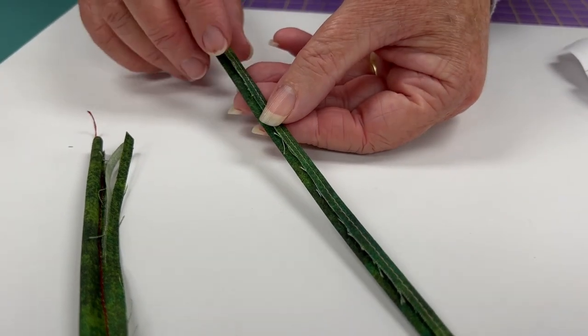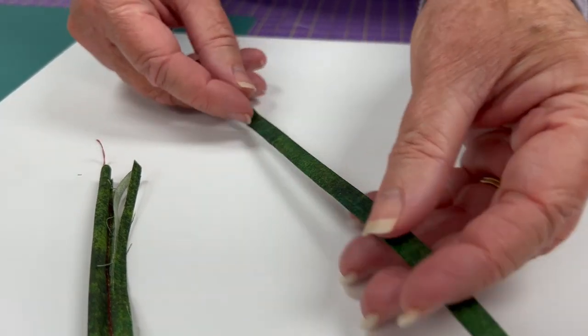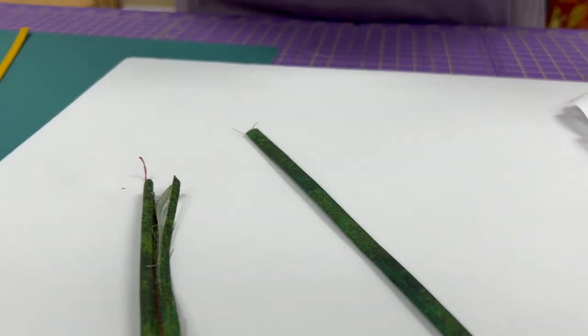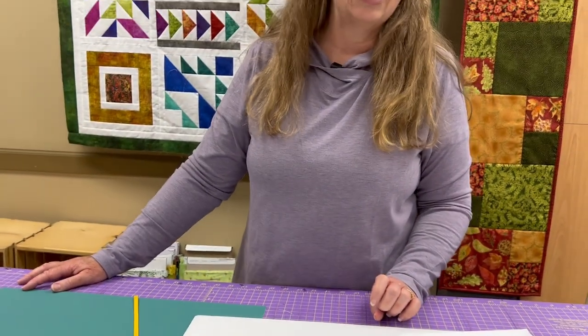It is totally enclosed. There are no raw edges on the front side and you can use it for stems on applique. So it's a great way to make those narrow little stems when you need them for applique projects.